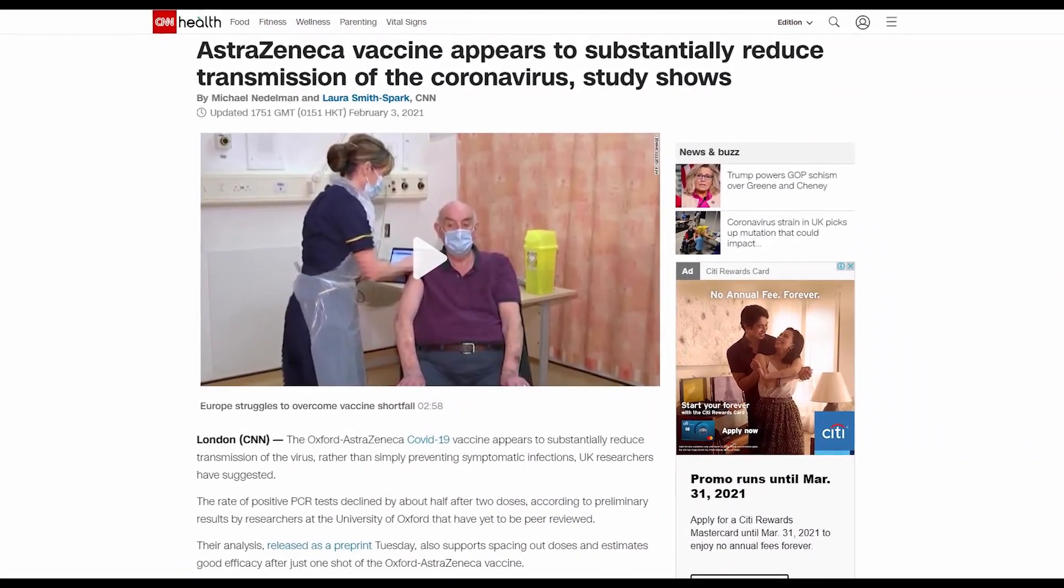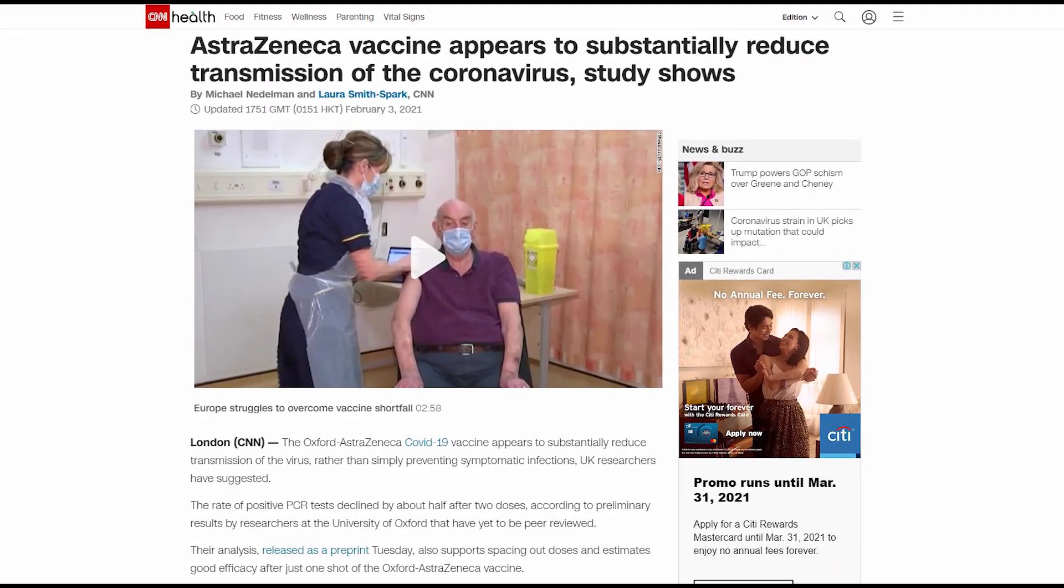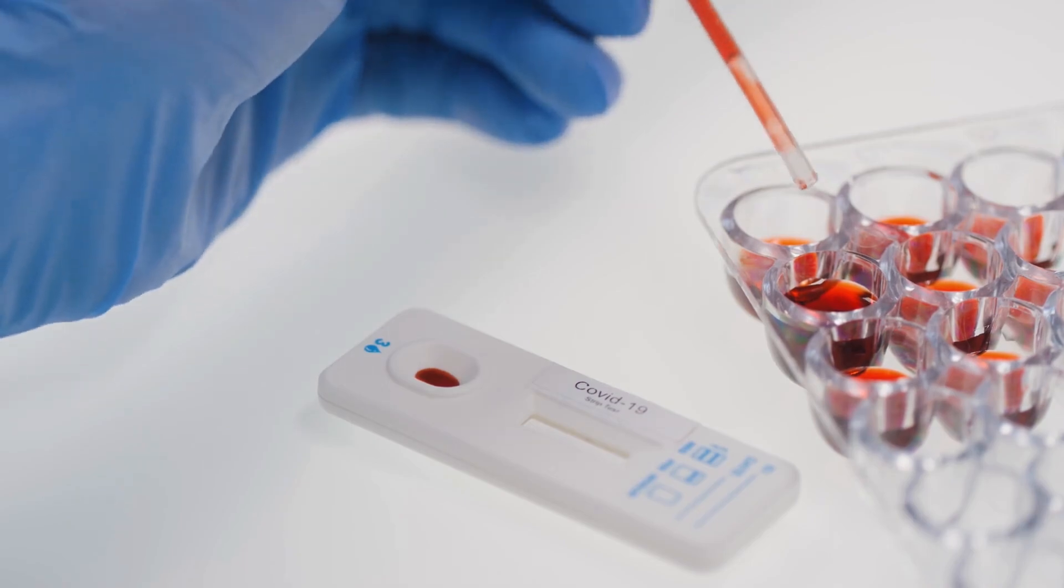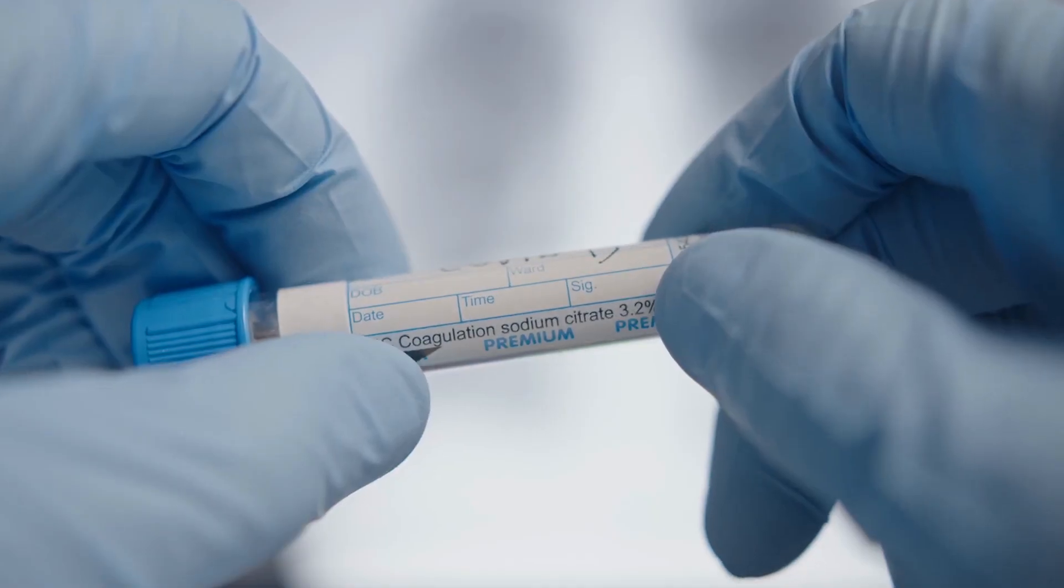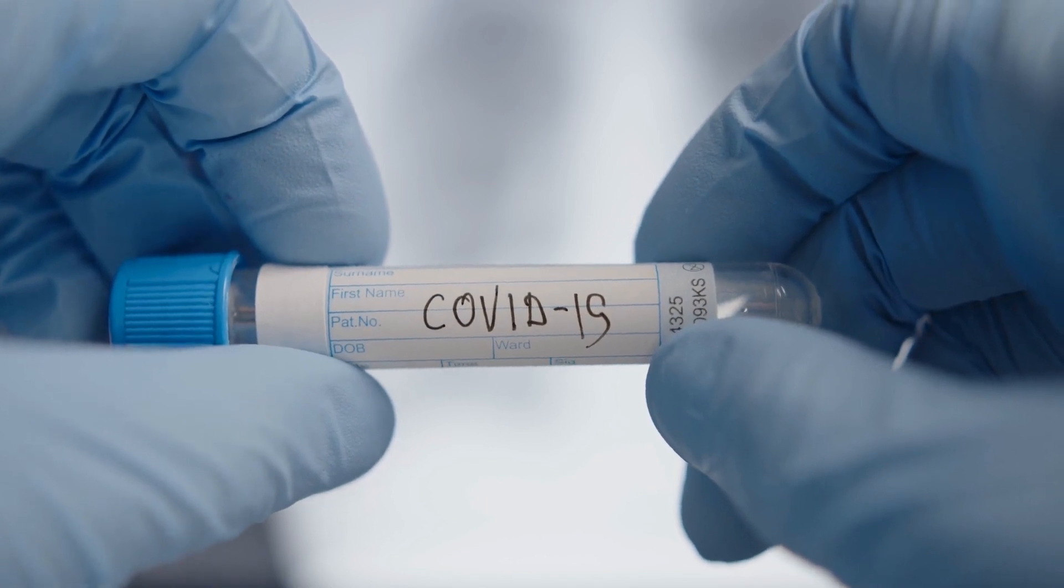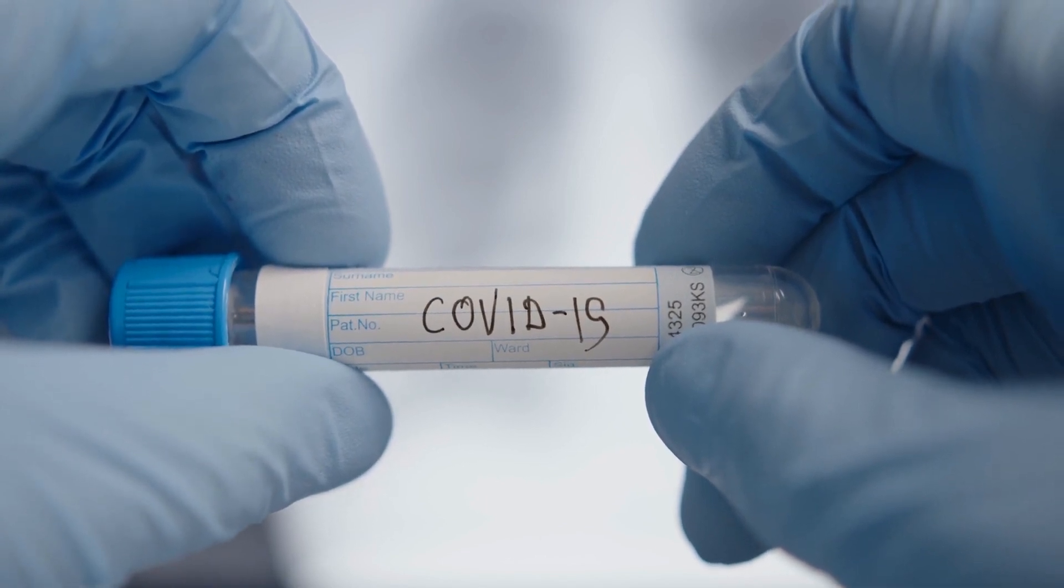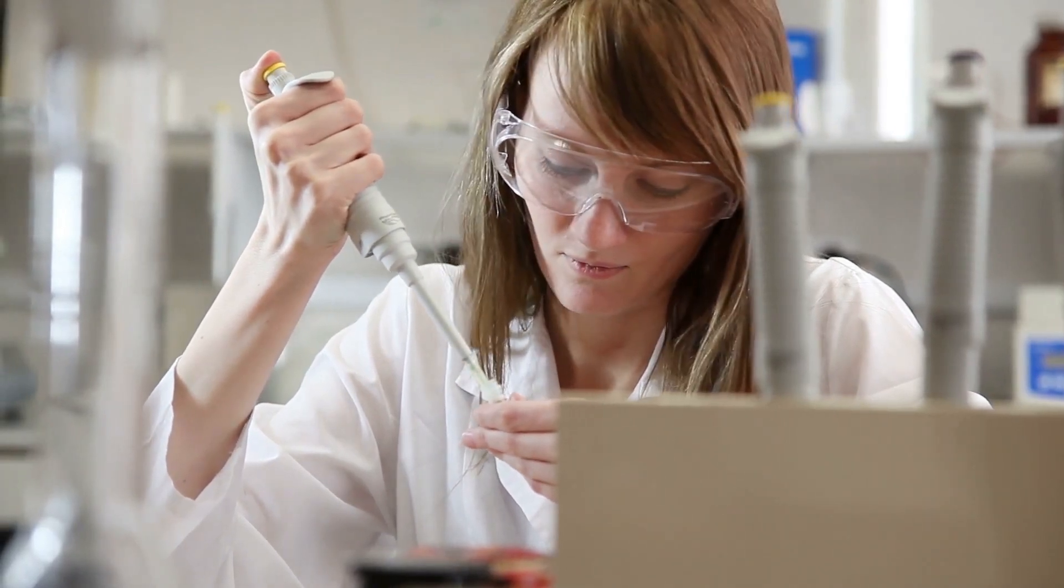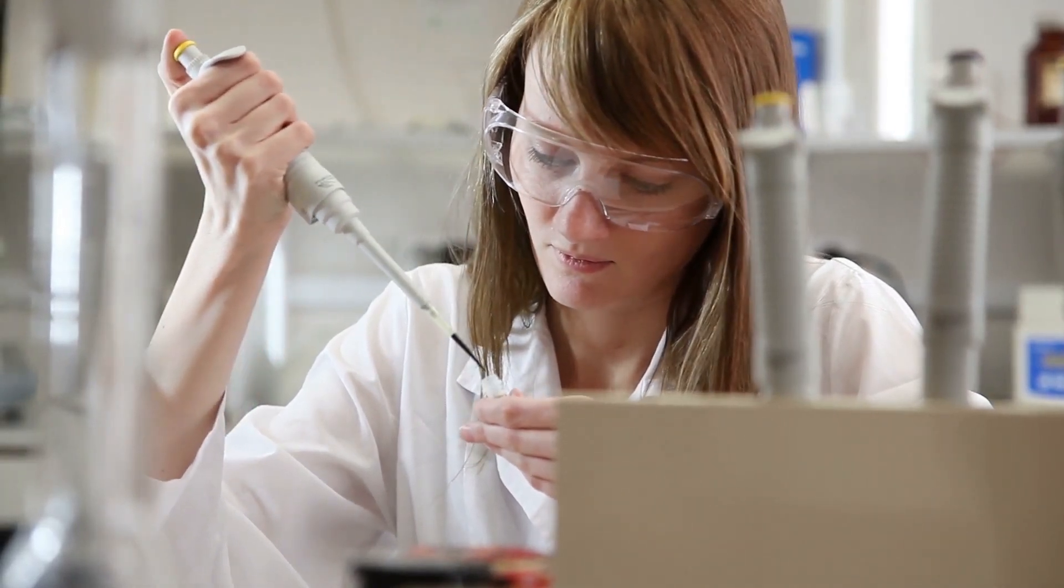According to CNN, researchers didn't directly measure the transmission in the study. What suggested it was the COVID-19 positivity rate in tests. The team had to collect swab samples frequently from some participants to assess the vaccine's performance. The samples were then tested using RT-PCR and details were added to the clinical trial data.